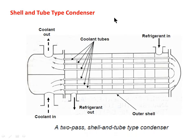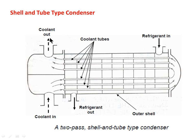Next is the shell and tube type condenser. The shell contains tubes inside it. It is a two-pass shell and tube type condenser because the coolant passes two times through the same shell — the first pass and the second pass. These are the coolant tubes, with a coolant inlet and coolant outlet. The coolant moves through the tubes in two passes, exiting at the outlet.